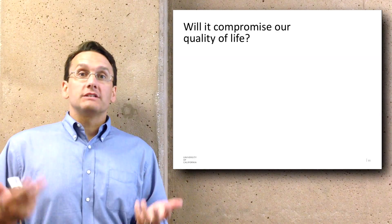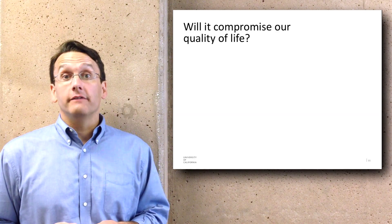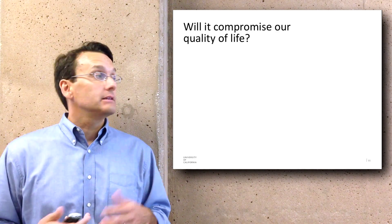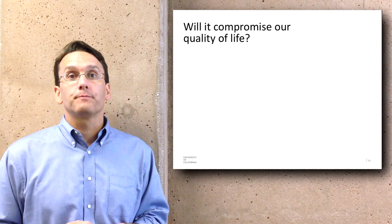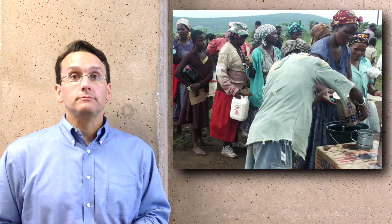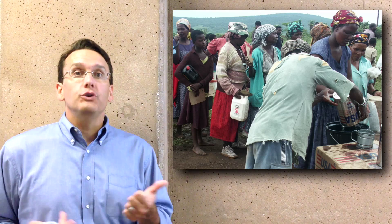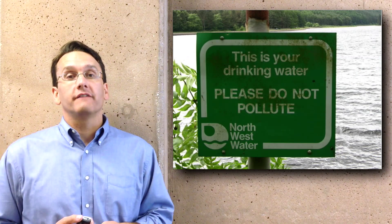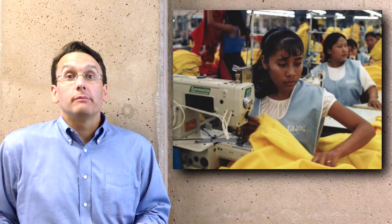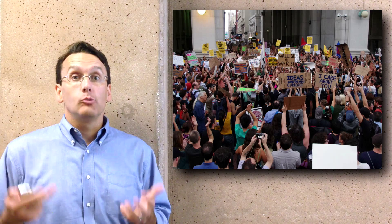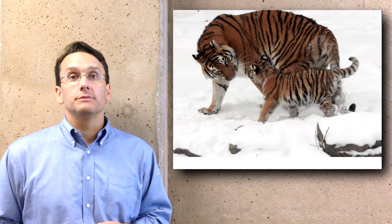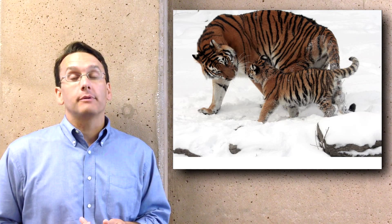Some people might say that new ways of living will compromise our quality of life — that if we don't have access to the same level of resource availability we currently find, our lives might get worse. But in many parts of the world, quality of life is already compromised: food is scarce, clean water is not available, the air is polluted, people are oppressed, women are unable to pursue an education, global financial inequality is severe, animals are needlessly suffering on industrial farms, and species around the world are rapidly going extinct.